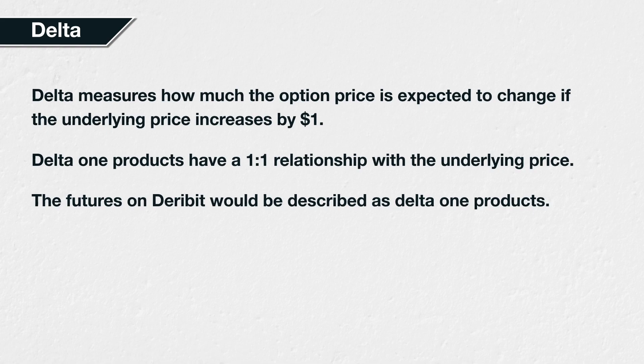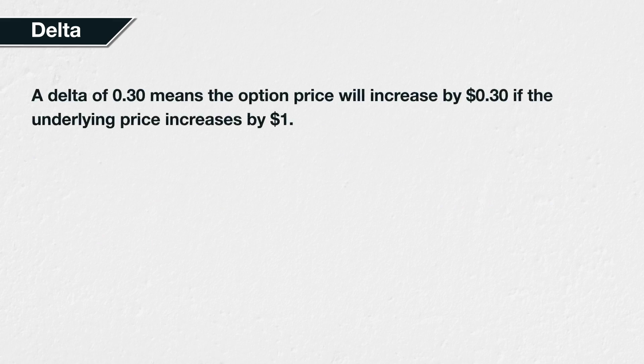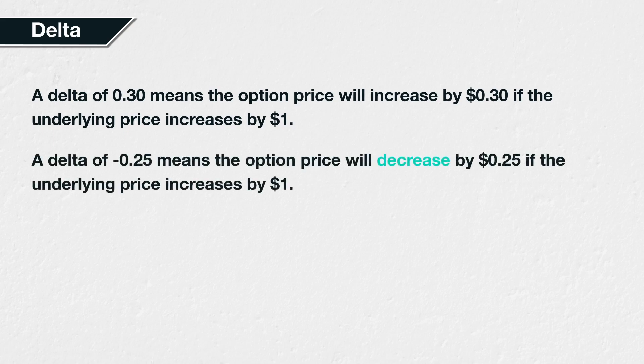Not all financial derivatives have a delta of 1, though. The delta of an option will be between minus 1 and 1. All other things being equal, for every $1 increase in the underlying price, an option's value will change according to its delta. For example, a delta of 0.3 means the price of the option is expected to increase by 30 cents if the underlying price increases by $1. A delta of minus 0.25 means the price of the option is expected to decrease by 25 cents if the underlying price increases by $1.